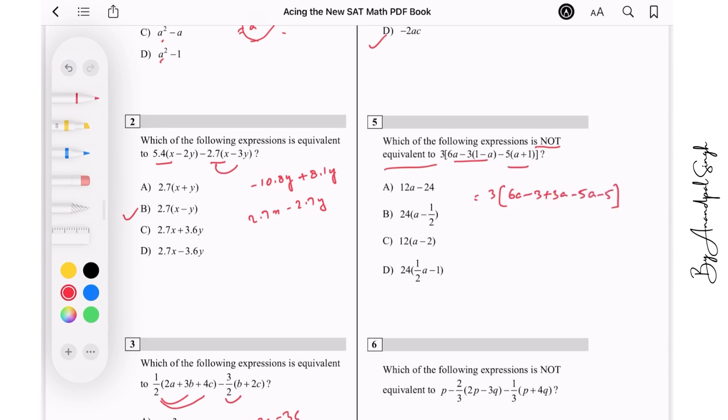So this gives you 3 times 3a minus this, so minus 9 minus 4a.